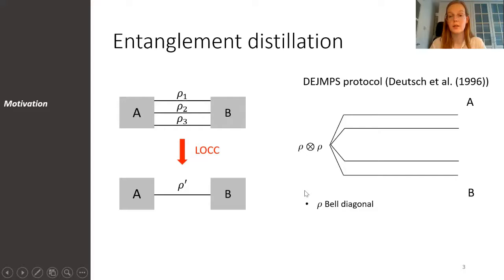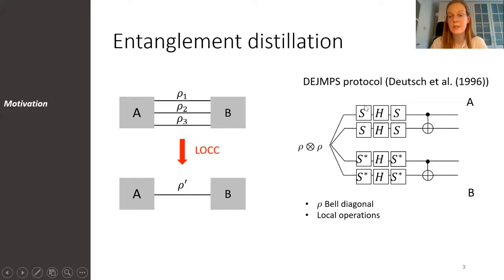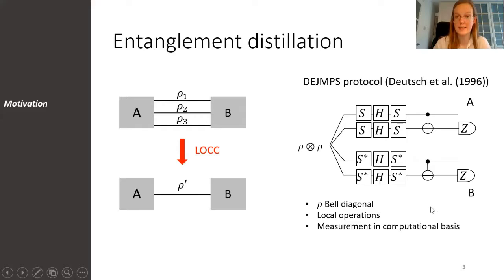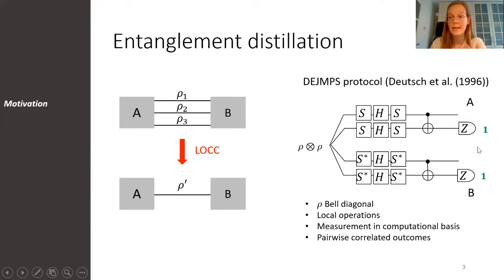In this protocol, we start with a two-fold tensor product of a Bell-diagonal state. The first step is that Alice and Bob perform local operations on their qubits. In the DAMES Protocol, these operations consist of phase operations, Hadamard operations, and CNOT operations. The next step is that Alice and Bob measure one of their qubits in a computational basis. They communicate the outcomes via classical communication and check for pairwise correlation. If both outcomes are the same, they keep the state that was not measured and call the protocol successful. If the outcomes are not equal, they discard all states and the protocol was unsuccessful.